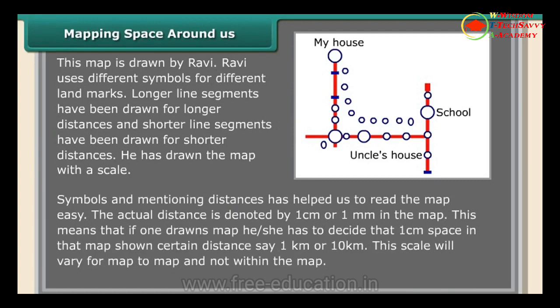The actual distance is denoted by one centimeter or one millimeter on the map. This means that when drawing a map, one has to decide that one centimeter on the map represents a certain real-world distance, such as one kilometer or ten kilometers. This scale will vary from map to map but not within the same map.